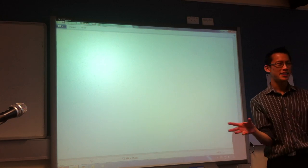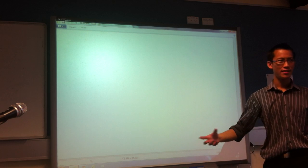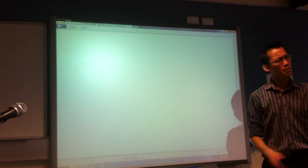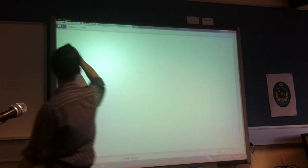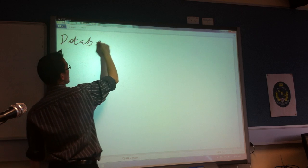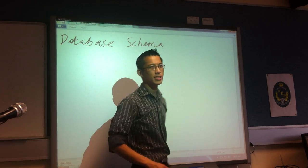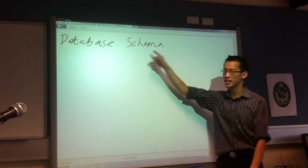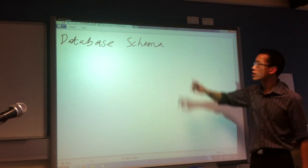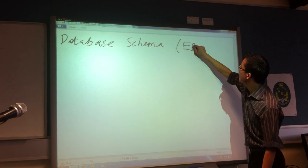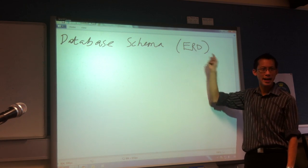Looking at the last piece here, which is a way of diagrammatically, visually, graphically representing a database, particularly a relational database. This is called a database schema — that's the main word you'll hear for it. You can hear the word 'schematic' that comes out of that — schematic diagram. Occasionally you'll hear it called an ERD, which is an Entity Relationship Diagram.